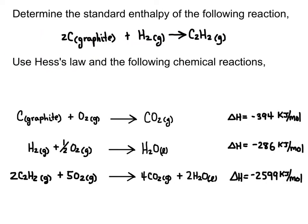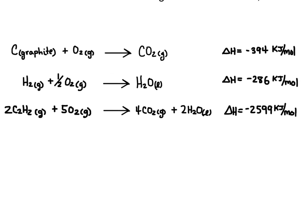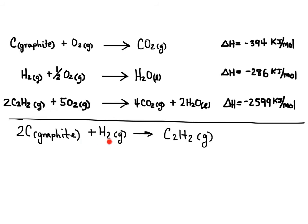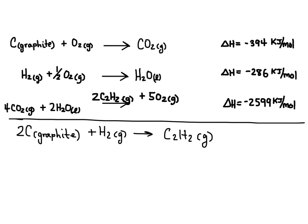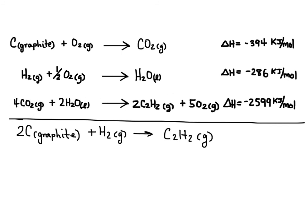Let's try one more — the type of question commonly found in a chemistry textbook. Determine the standard enthalpy of a given reaction using Hess's law and the provided steps. I write the target reaction below the steps. Carbon graphite and H2 are needed on the left side — both are already there — but acetylene (C2H2) is on the wrong side, so I flip the third reaction and change its enthalpy sign to positive 2,599 kilojoules per mole.